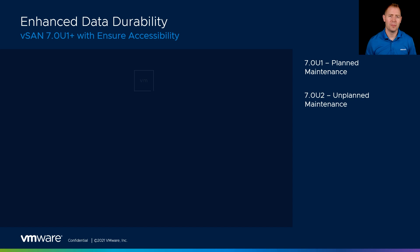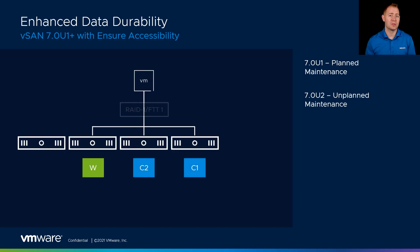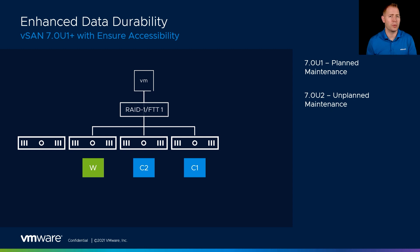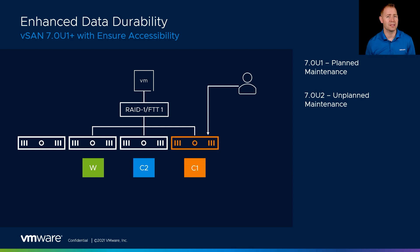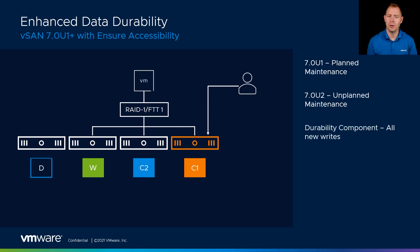Let's walk through that scenario again but in a 7.0U2 environment. Taking a step back: in 7.0U1 we initially introduced this feature for planned maintenances, which would be putting a host in maintenance mode. For U2, we allowed for unplanned maintenances — an outage whether it's a controller failure, a disk failure, or some unexpected situation. So in a 7.0U2 environment, when our administrator puts a host in maintenance mode with Ensure Accessibility, things change slightly because we've got a new component type. We've got a data component, a witness component, and — assuming a RAID 1 FTT=1 policy — something called a durability component.